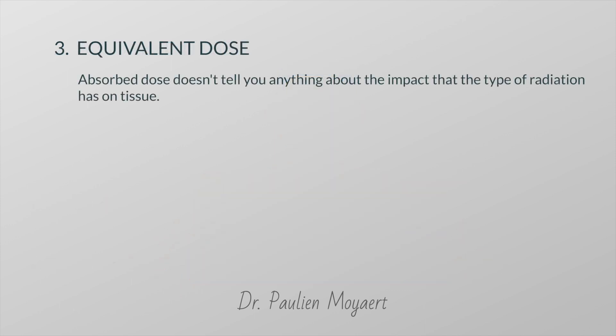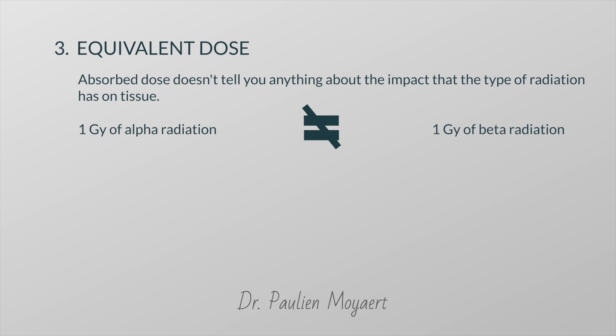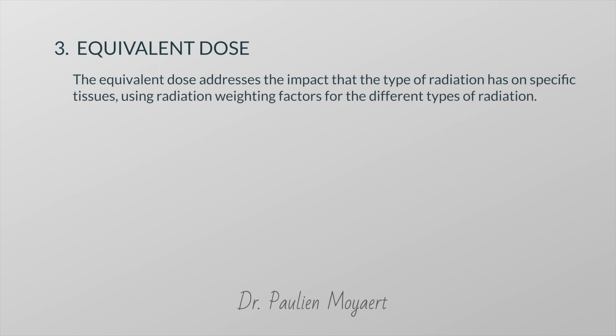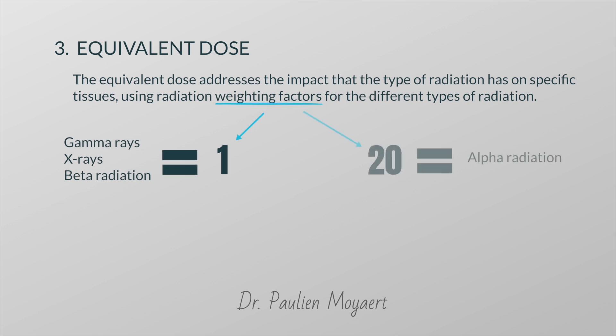Absorbed dose is the amount of radiation energy absorbed in tissue. However, different types of radiation cause different levels of biological damage to tissue. Absorbed dose doesn't tell you anything about the impact that the type of radiation has on that tissue — for example, one Gray of alpha radiation is more harmful than one Gray of beta radiation. To account for this, we use the equivalent dose, which addresses the impact that the type of radiation has on that tissue. It uses radiation weighting factors: gamma and X-rays have a weighting factor of 1, as do betas. Alphas have a weighting factor of 20, meaning they cause 20 times the biological damage of gamma rays for the same absorbed dose.